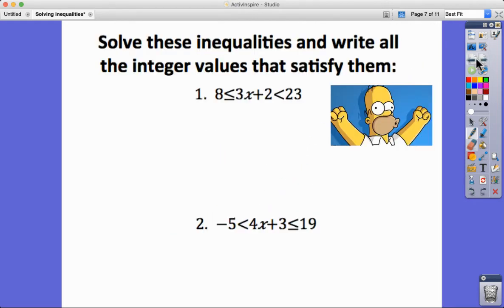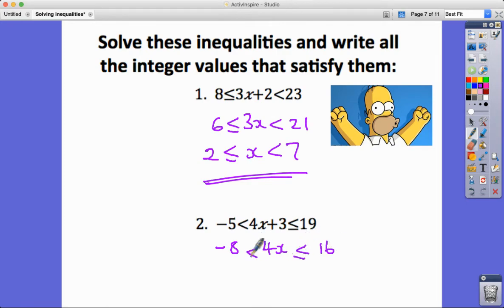A couple of examples here. Here's Homer cheering you on, so in this one, feel free to pause if you like, we'll run through now. Minus 2, so we get 3x if we subtract 2 from both sides, we get 21 and we get 6, and then we divide by 3, so we get this answer. In this one I'm going to take away 3 first of all, so I get minus 8, I get 4x, and minus 3 from this one I get 16, and put the inequality signs in. I'm just dividing by 4, positive 4, so it's minus 2, x, and 16 divided by 4 is 4.